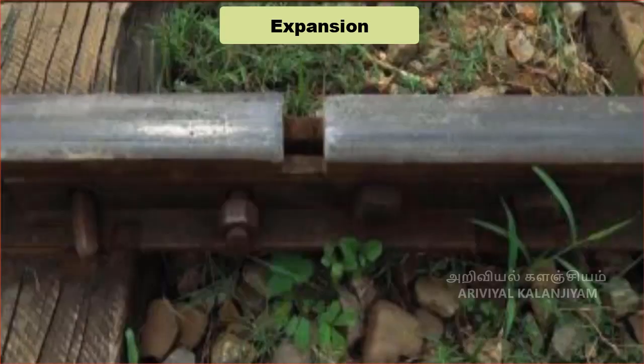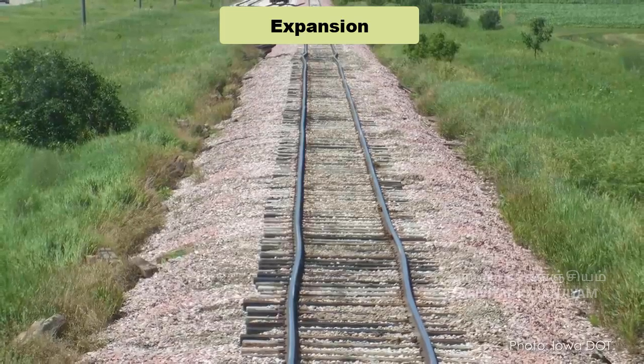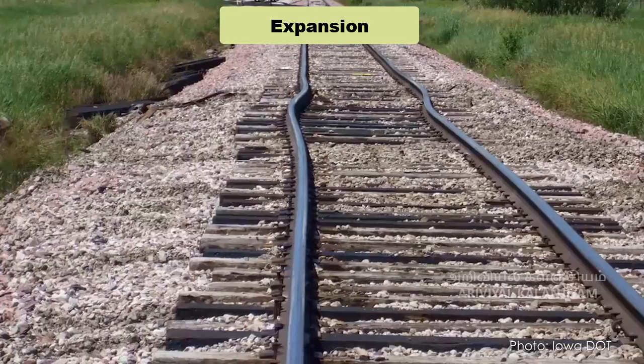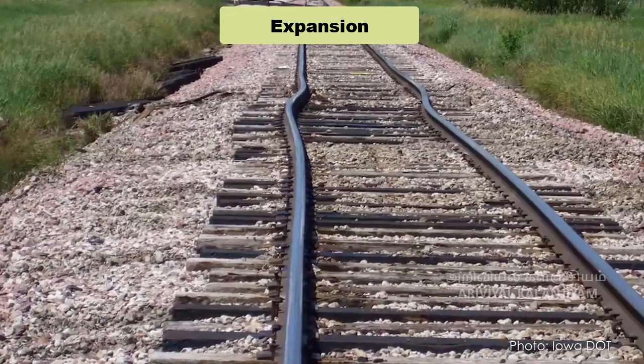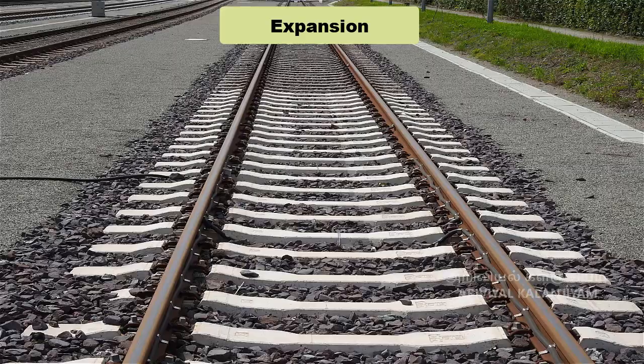For expansion of solids, we can see another example in railway tracks. You would have noticed some space being left in railway tracks. Why is it so? It is because railway tracks, which are made up of iron metal, expand during summer. When there is a gap, there will not be any damage in the track due to expansion of the metal rod.